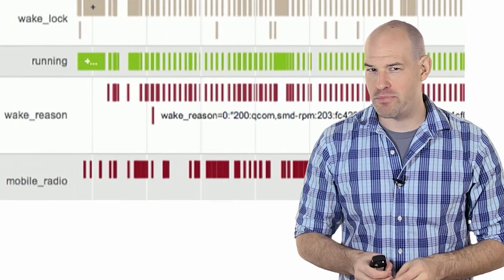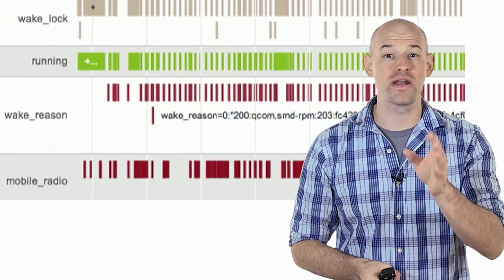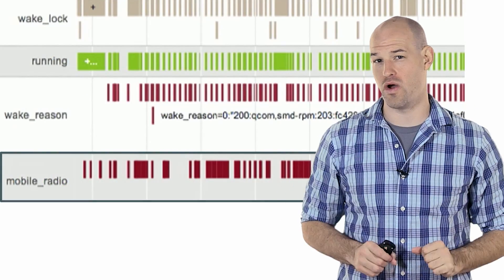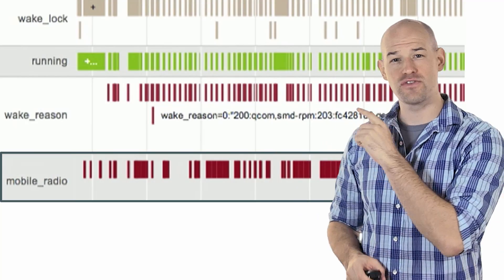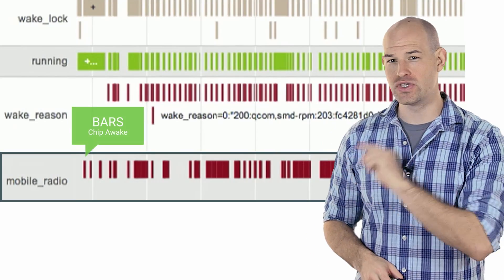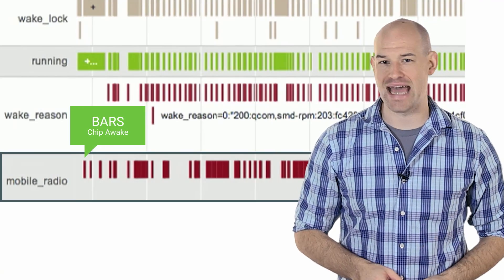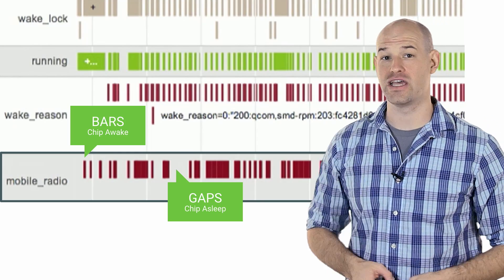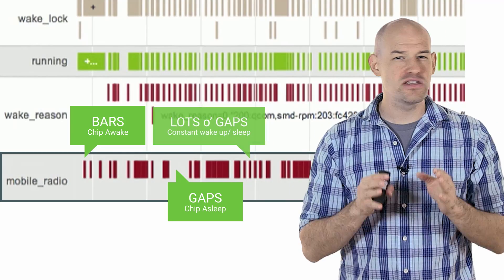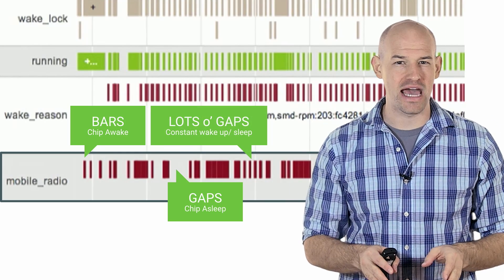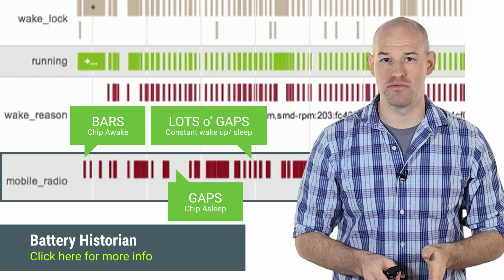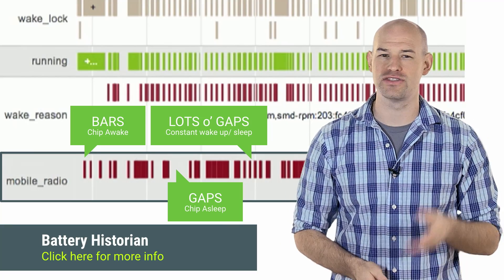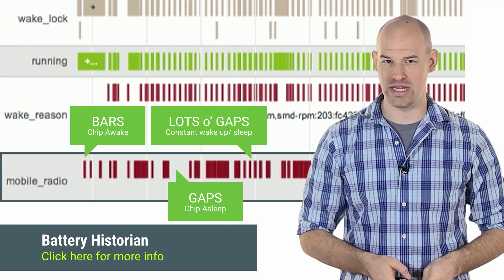You can see how bad of a problem this is by running Battery Historian and looking at the mobile radio row for your application. Each red bar represents when the mobile radio is active, and any gaps between those bars represent when the radio is asleep. If you see lots of narrow bars and gaps, this points to a performance problem, since it means you're churning through lots of wake-up and sleep iterations for your radio chip.